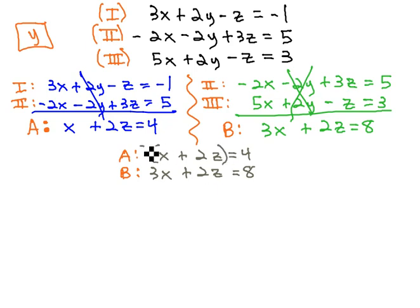Multiply the first equation by negative 1, come over here to the right, and it gives me negative x minus 2z equals negative 4. Equation B is still 3x plus 2z equals 8.